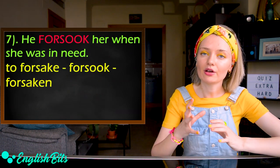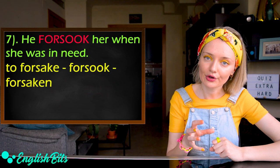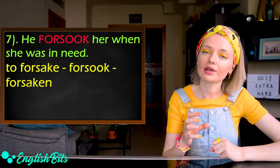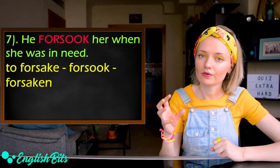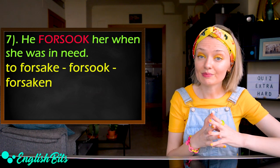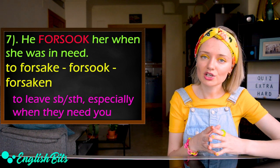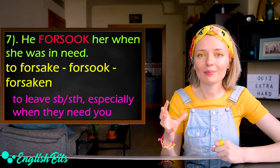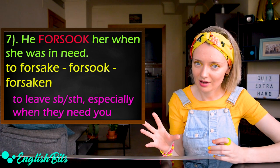Number seven: He forsook her when she was in need. The verb is to forsake, forsook, forsaken. It means to leave somebody or something, especially when they need you. It's a synonym of to abandon. To forsake, forsook, forsaken. Was it correct?